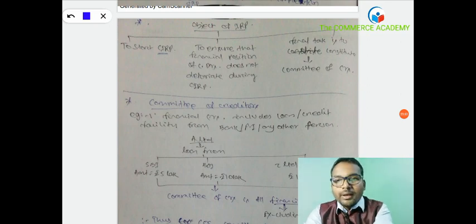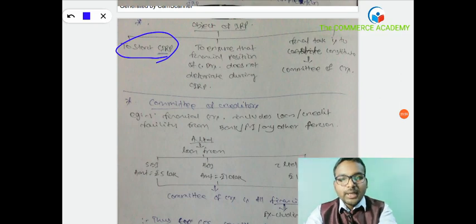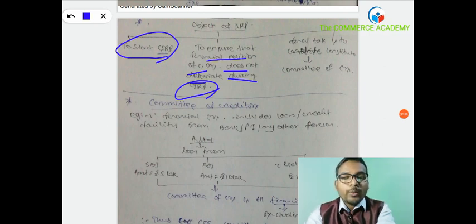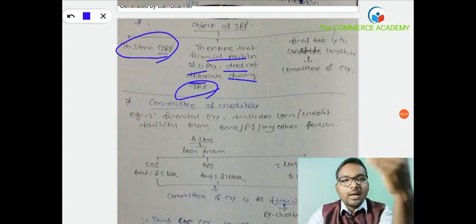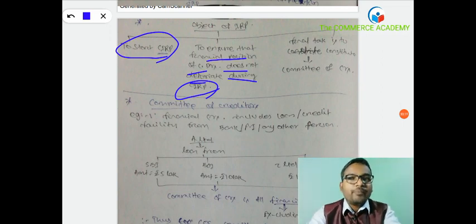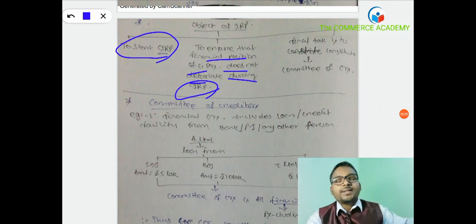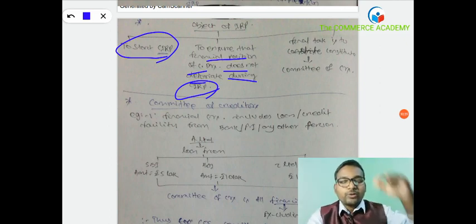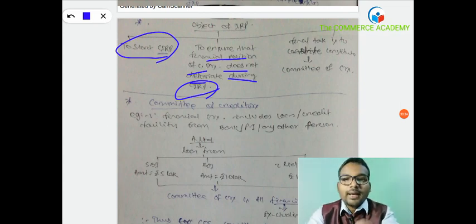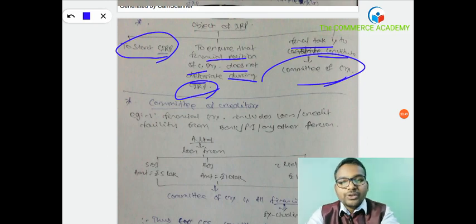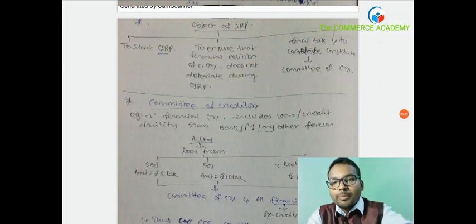The object of appointing IRP is to start CIRP and to ensure that the financial position of the corporate debtor does not deteriorate during CIRP. This means that if the corporate debtor starts selling its assets during the CIRP process, the IRP controls this. The final task of the IRP is to constitute the committee of creditors within 30 days.